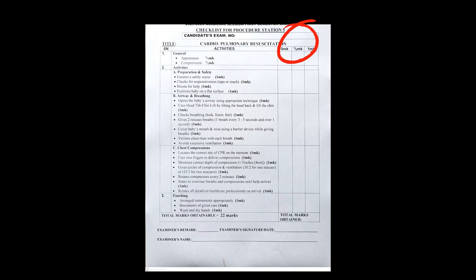Now let's look at the checklist that will be used to score you. You'll be awarded zero marks, half a mark, or one full mark. In total you are to be awarded 22 marks. The first scoring category is the general section: you'll be awarded marks based on your appearance and your comportment — how composed you are.